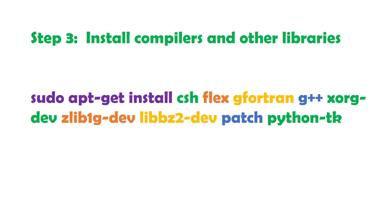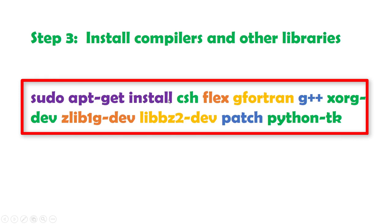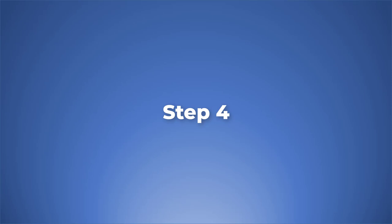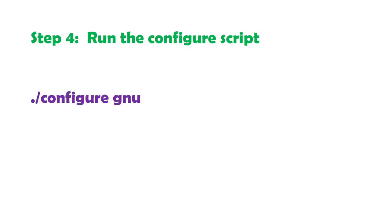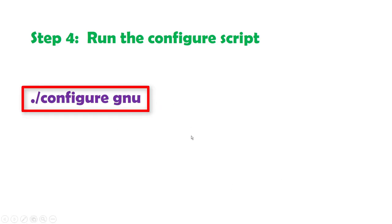The third step is the installation of compilers and other libraries. I will do it in a single command: sudo apt-get install, and then write the names of the compilers and libraries.